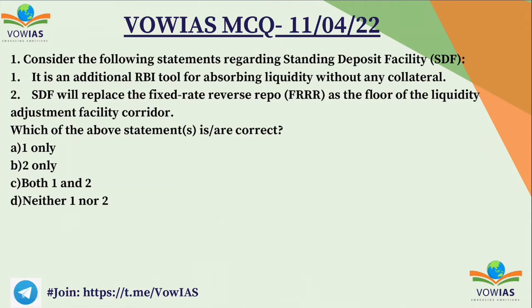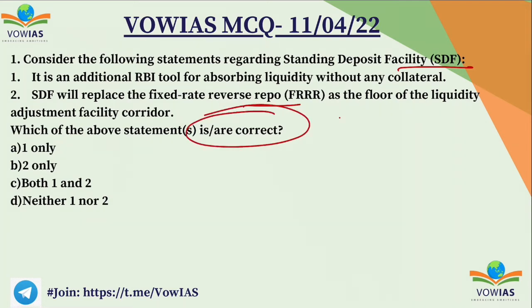Consider the following statements regarding the Standing Deposit Facility. First, it is an additional RBI tool for absorbing liquidity without any collateral. Second, SDF will replace the fixed rate reverse repo as the floor of the liquidity adjustment facility corridor. Options: A) 1 only, B) 2 only, C) both 1 and 2, D) neither 1 nor 2. The correct option is C — both 1 and 2. Both statements are correct.